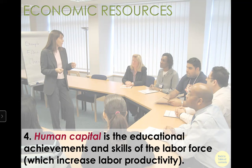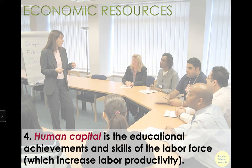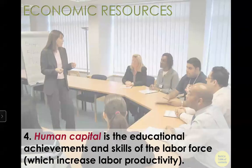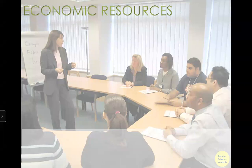Think about education, think about knowledge. Human capital is the educational achievement and skills of the labor force. In some sense, human capital is similar to technology — it's going to improve the efficiency of our production. So those are the four important things we need to understand so that we can expand our production possibility frontier.